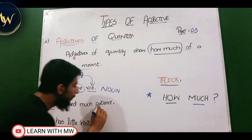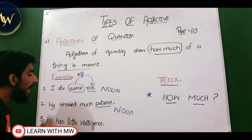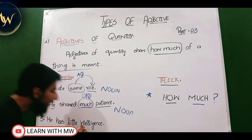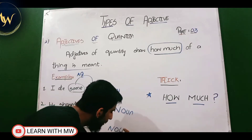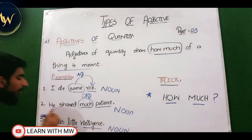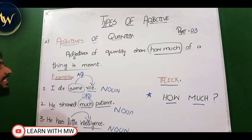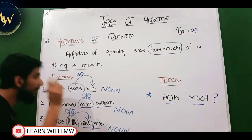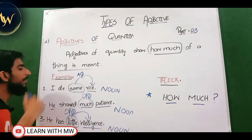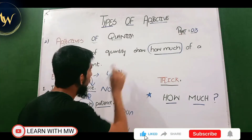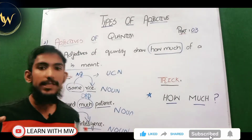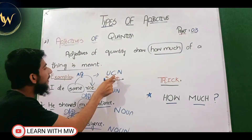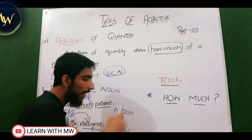For example: 'He showed much patience' — patience is a noun, and much adds meaning to it, answering the question how much, so much is adjective of quantity. Also, 'He has little intelligence' — intelligence is a noun, and little adds meaning to it, answering how much. So little is also adjective of quantity. An important point to remember: adjective of quantity basically comes with uncountable nouns. We will differentiate more between adjective of quantity and adjective of number when we study the third type.